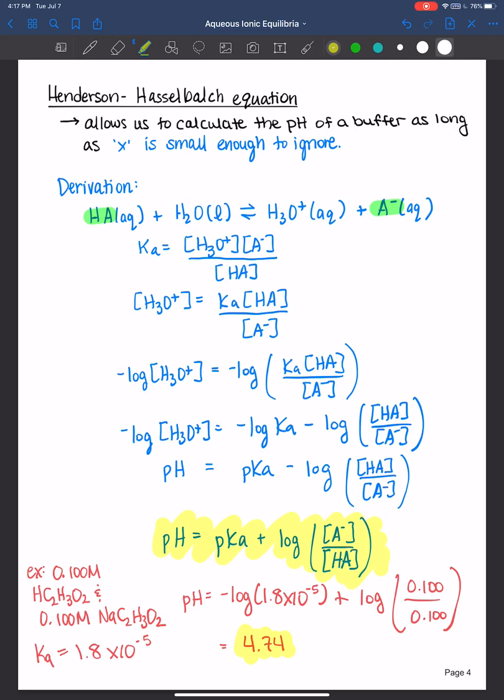So once again, the Henderson-Hasselbalch allows us to calculate the pH of a buffer as long as X is small enough to ignore. And for buffers only, okay? So whenever you ask yourself, what's in my beaker? If the answer is a weak acid and its conjugate base and you know X is small enough to ignore, then you can use the Henderson-Hasselbalch equation. And I just want you to be very mindful of that because when I teach you titrations, you need to be careful about when you utilize the Henderson-Hasselbalch and when you cannot.